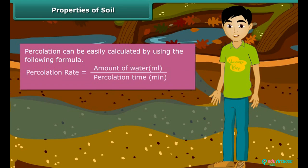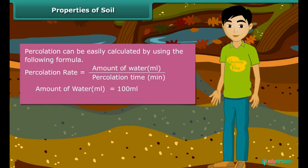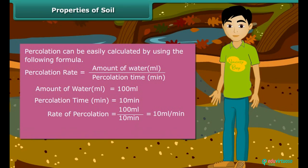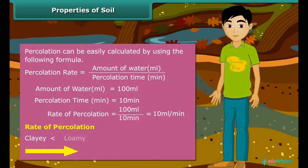Suppose that for a certain soil sample, it took 10 minutes for 100 milliliter to percolate. Then rate of percolation will be equal to 10 ml per minute. Rate of percolation is different for different soils. Sandy soil can absorb more water than clay and loamy soil.